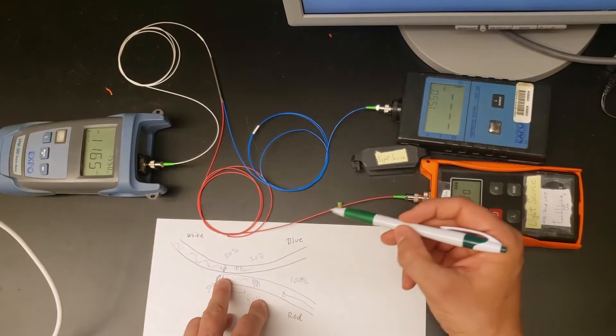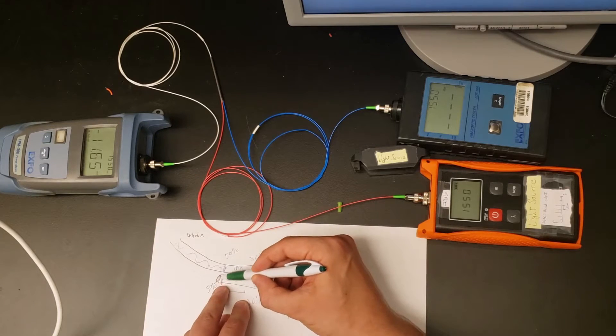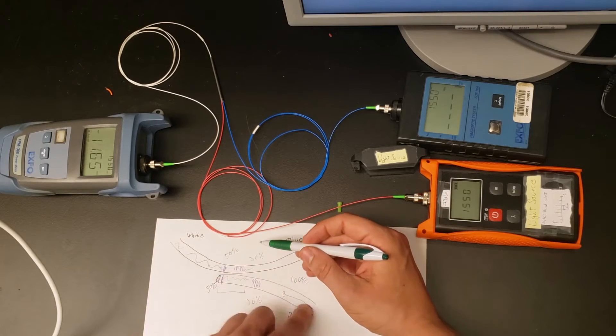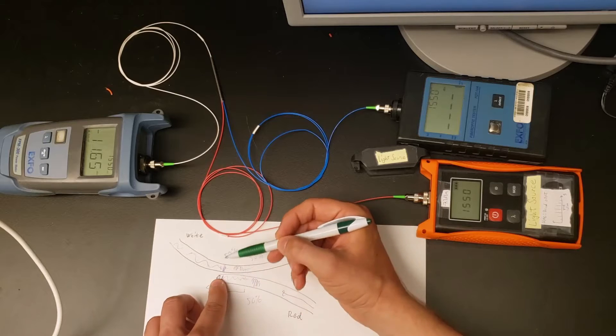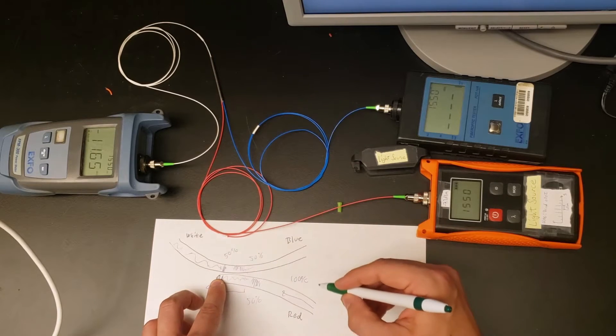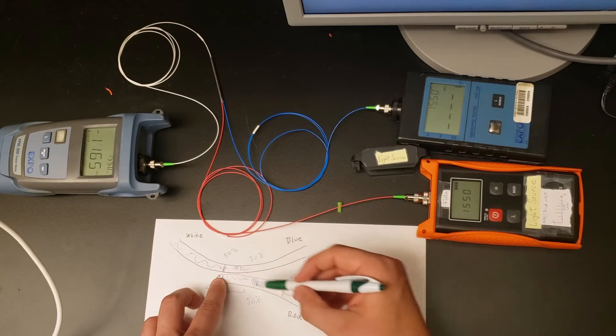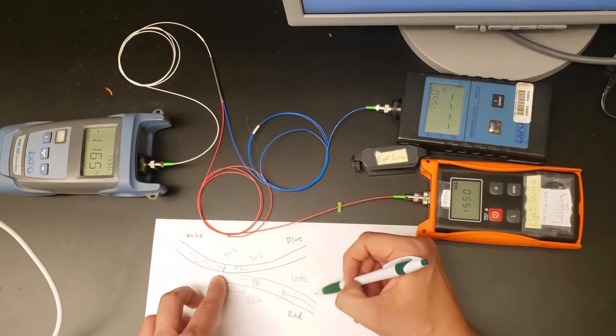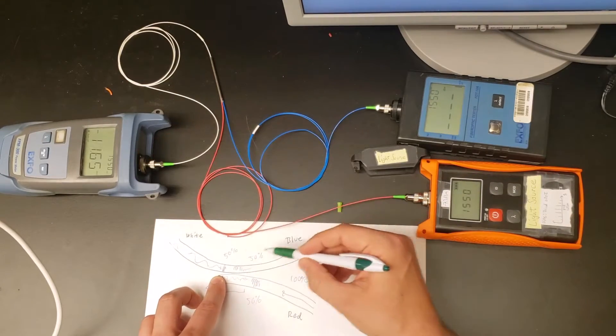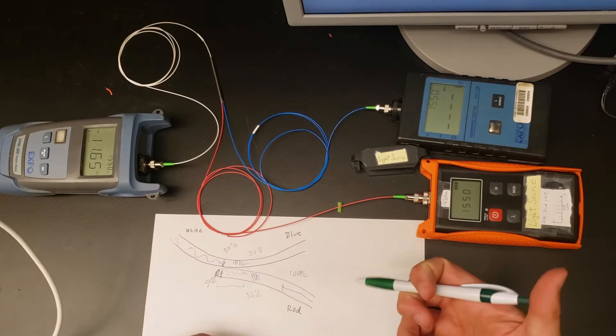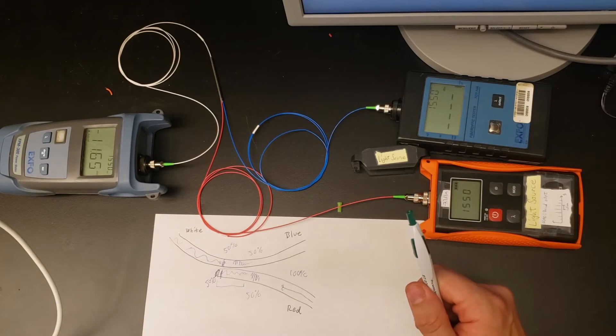But the way this particular coupler is designed is they simply cut off this branch of the lower fiber, so this is a dead end. That power gets lost, doesn't go anywhere, which explains why we only get 50% of the power we send in coming out over here.